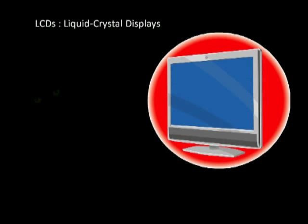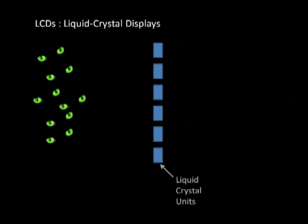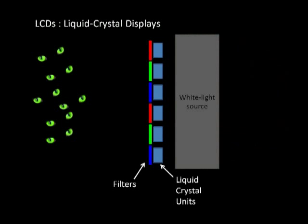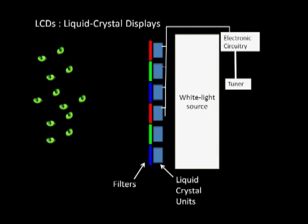An LCD TV screen is made up of thousands of tiny liquid crystal subpixels. In front of each subpixel is either a red or a green or a blue filter. Behind the liquid crystal array is a white light source, usually rows of white LEDs. Each liquid crystal subpixel is connected to the electronic circuitry of the TV, and its transparency can be controlled.